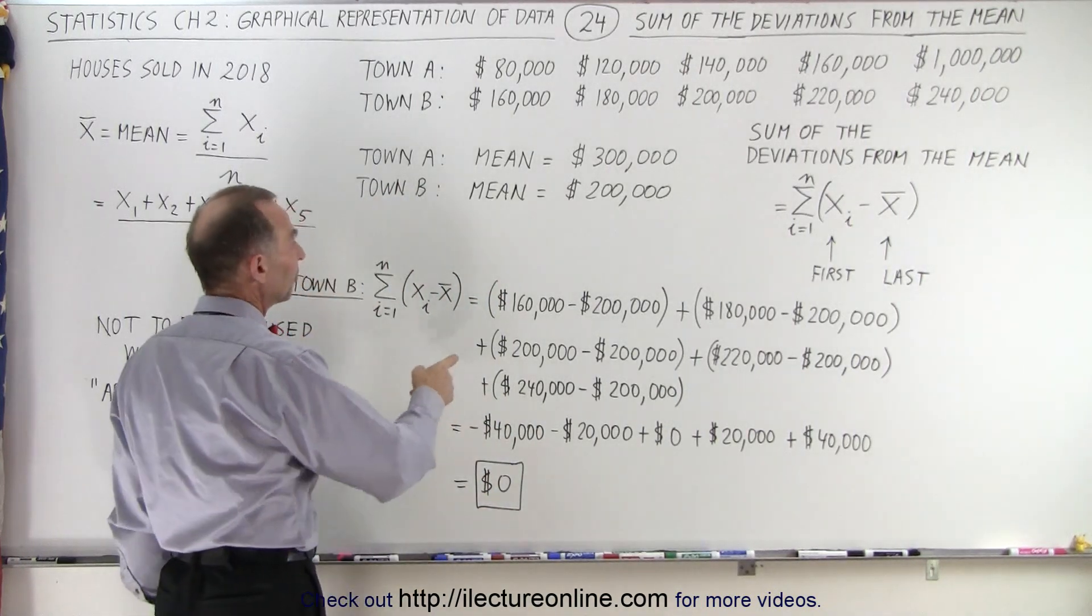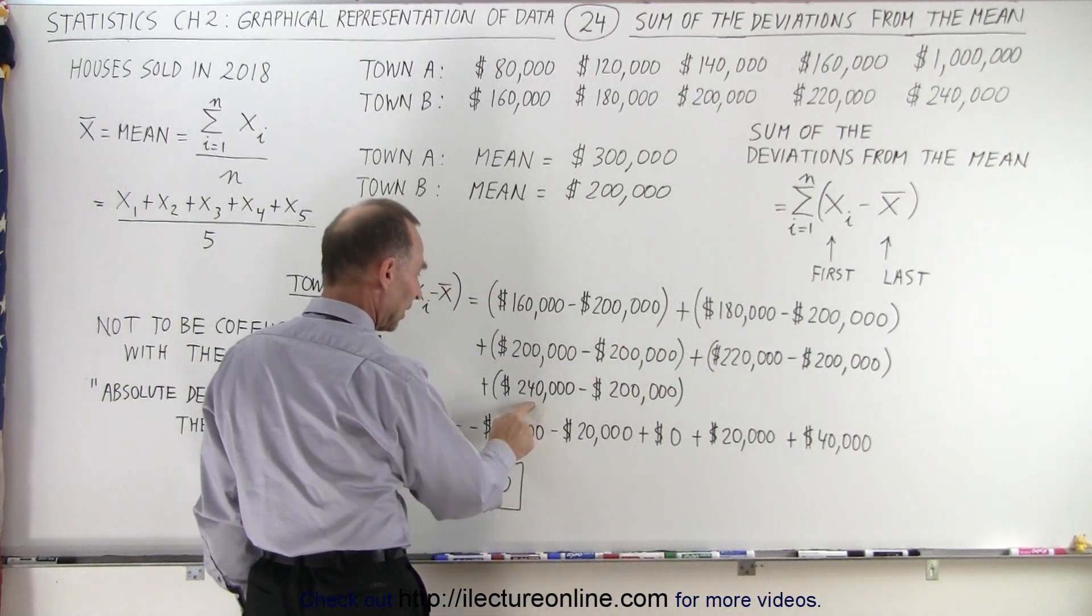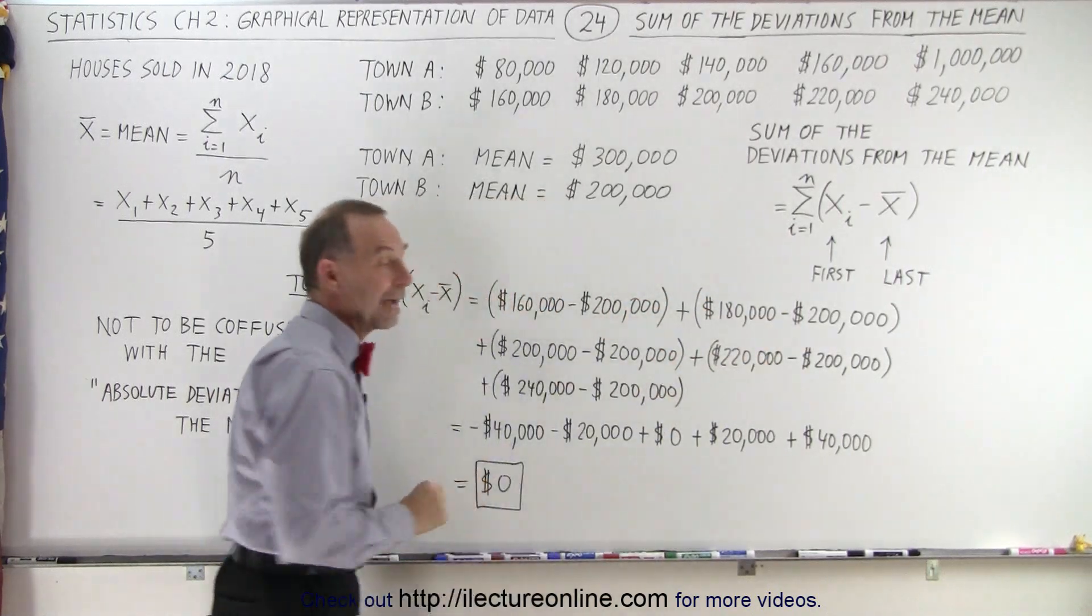So we had five house prices. Here's the first house price, the second, the third, the fourth, and the fifth right here. And then of course we subtract from each the mean or the average house price.